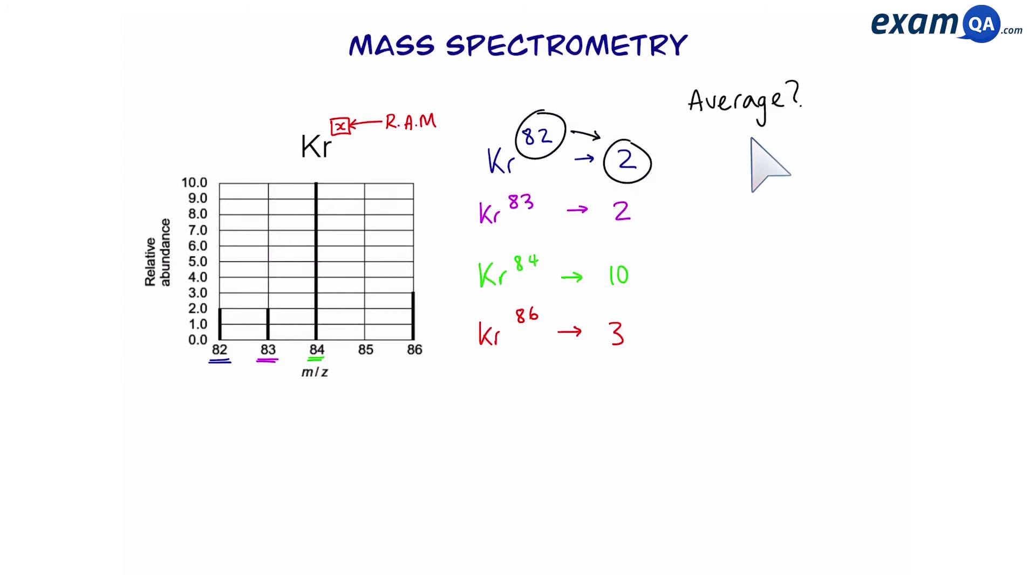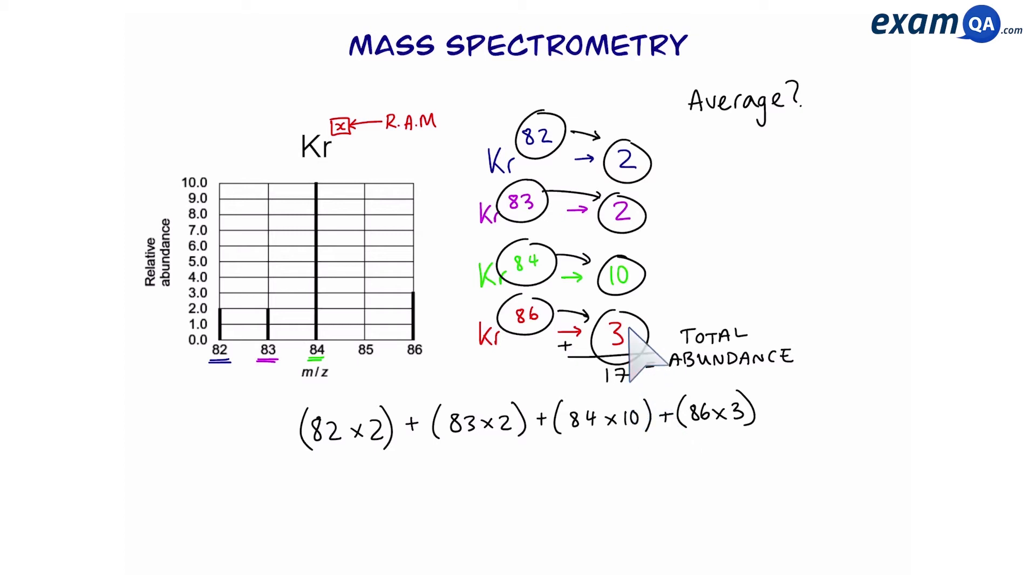Once we have all the information from the graph, next we want to work out the average. So we're going to take the mass number and times it by the abundance. We are then going to add this to the next isotope and continue until we've done all of the different isotopes. Then work out the total abundance by adding them all together and divide by the total abundance. This gives us a final answer of 84 and that is the relative atomic mass or the average of all the different isotopes.